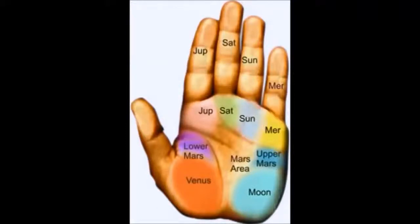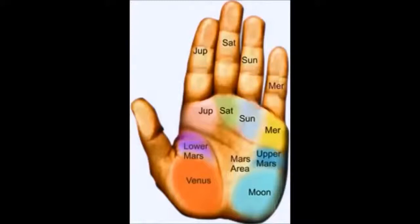Now, looking at the actual hand itself and the picture - the first thing I look at is which hand to use. I take into account whether a person is left or right-handed, because that's their dominant hand. The dominant hand is more insightful about who that person is on the inside, and the other hand is about the image they portray of themselves. Personally I'm left-handed, so someone reading me would use my left hand, then compare it with the right hand to see how my inner self corresponds with what I put out in the real world.